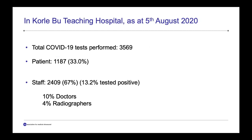In my hospital, the Kolibu Teaching Hospital in Accra, Ghana, as of the 5th of August, we had performed about 3,569 tests. Of these tests, 33% were patients and 67% were tests done on staff. Of the staff who tested, 13.2% tested positive. Of that number, 10% were doctors and 4% were radiographers — bringing it home that people working in ultrasonography are also getting infected.